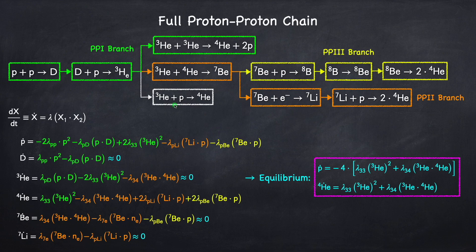In fact there are even more branches you could come up with, but their production rate is even lower, so generally we can safely ignore everything except for the three main branches. In Stellar Physics 5d we also set up a set of differential equations to describe the full proton-proton chain, and we're going to do a similar thing in this video for the CNO cycle.